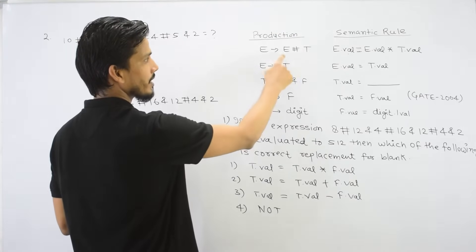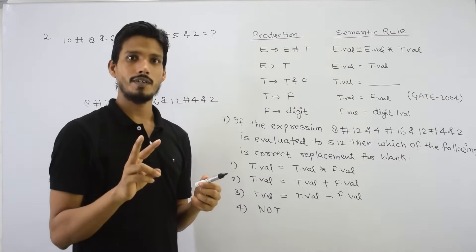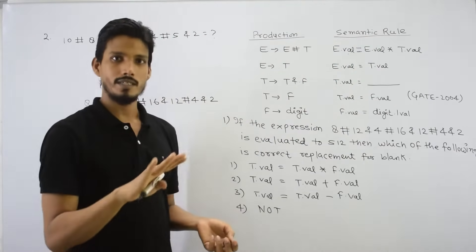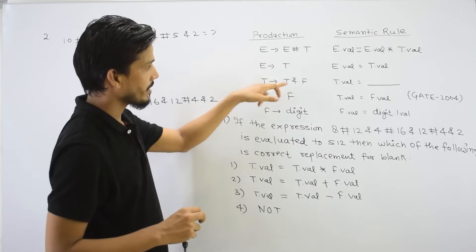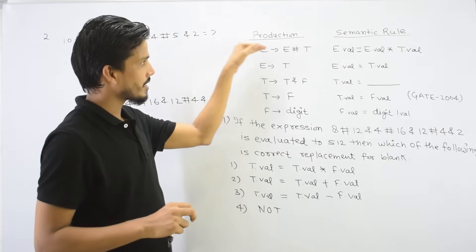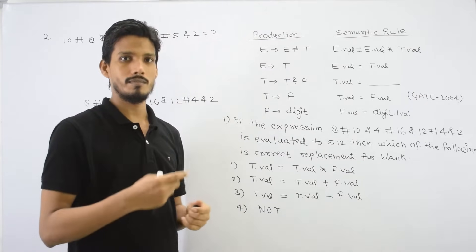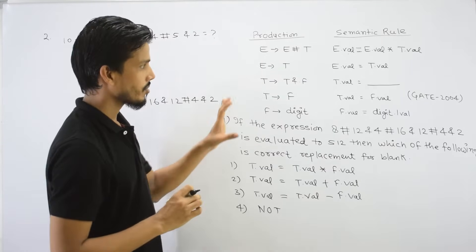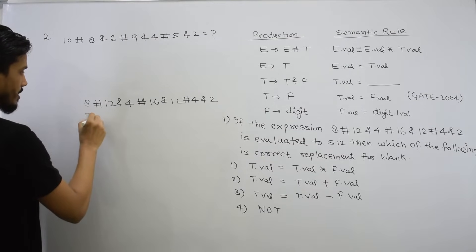Left-recursive grammar means the hash associativity will be left to right. T derives T hash F — the associativity is left to right. We will not check if star is high precedence and plus is low; instead, we check T and F for precedence. The operator in the production closer to the start variable has higher precedence. Now, let's substitute and check: 8 multiplied by 12 multiplied by 4 multiplied by 16 multiplied by 12.